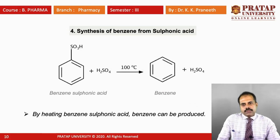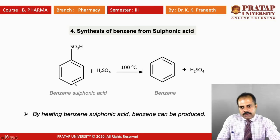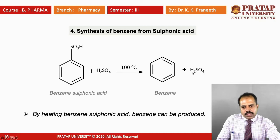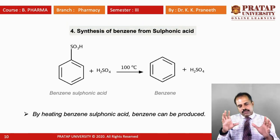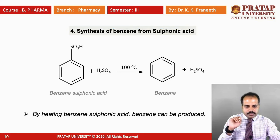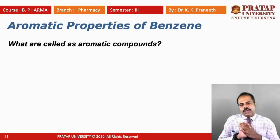The fourth method: you can prepare benzene from benzene sulfonic acid. Benzene sulfonic acid has an SO₃H group. If you heat this in the presence of sulfuric acid at 100 degrees Celsius, you get benzene plus H₂SO₄ back. So these are the four different methods you can use to prepare benzene.